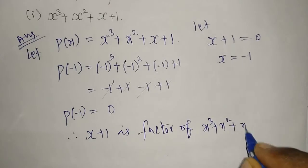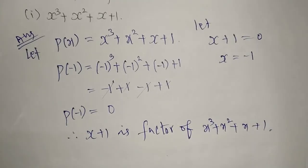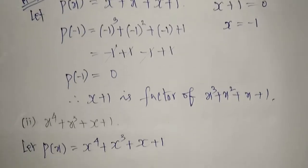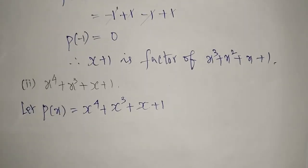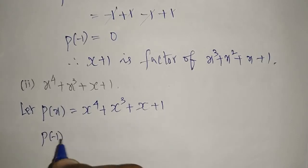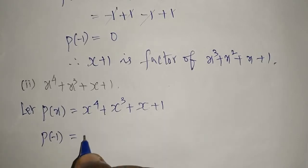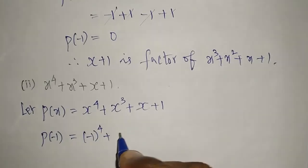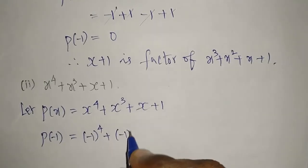Now for the second question: the polynomial is x⁴ + x³ + x + 1. I take the given polynomial as p(x). We already know the x value is -1, so I'm substituting -1 here. We get (-1)⁴ + (-1)³ + (-1) + 1.